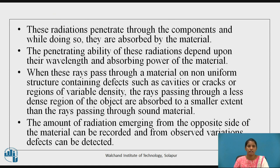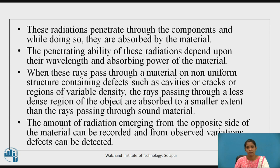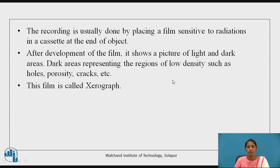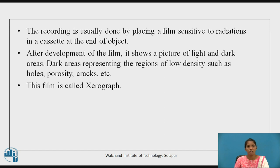These radiations penetrate through the components and are absorbed by the material. The penetrating ability of these radiations depends upon the wavelength and the absorbing power of the material. The amount of radiation emerging from the opposite side can be recorded and observed, so variations can be detected. Recording is usually done by placing a film sensitive to radiation in a cassette at the end of the object. After developing the film, it shows a picture of light and dark areas. Dark areas represent regions of low density such as holes, porosity, cracks, etc. The film is called a radiograph.